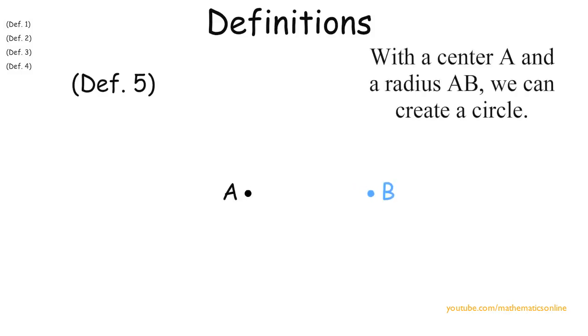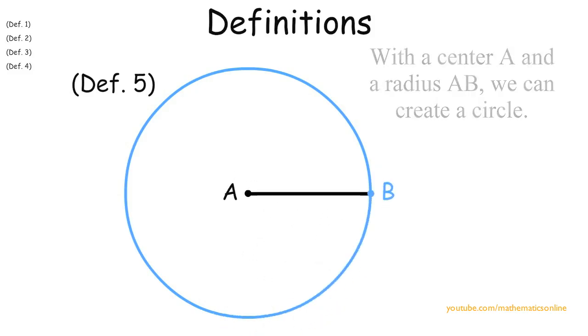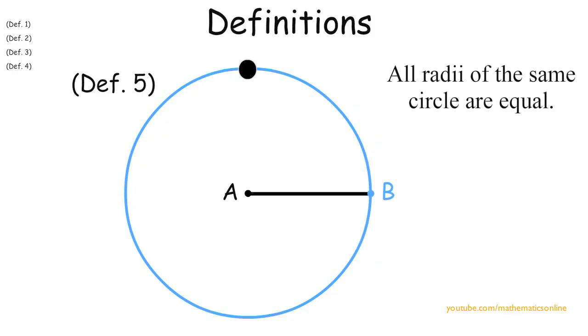Definition number five, with a center A and radius AB, we can create a circle. We call this circle AB. All radii of the same circle are equal.